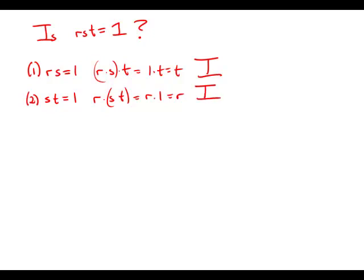Now the real crux of this problem is what happens when we combine these two statements. What happens if we know that r times s equals 1 and s times t equals 1?